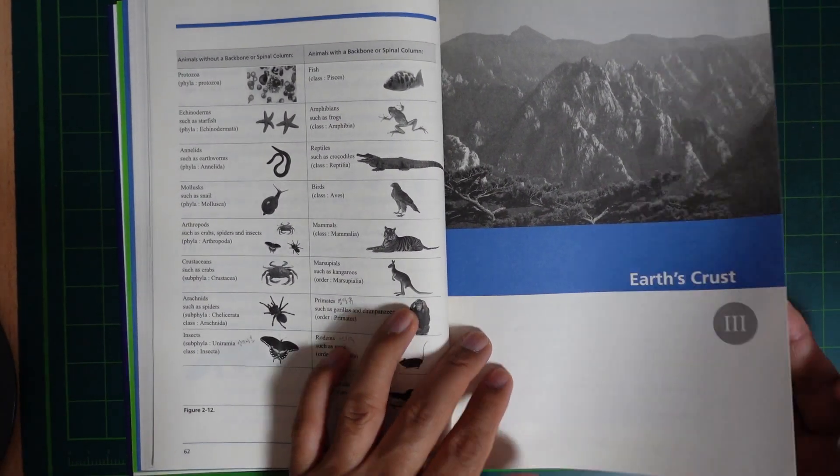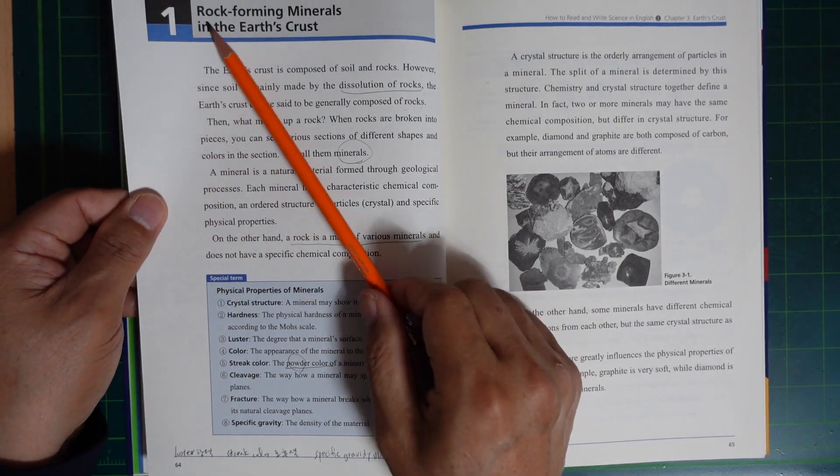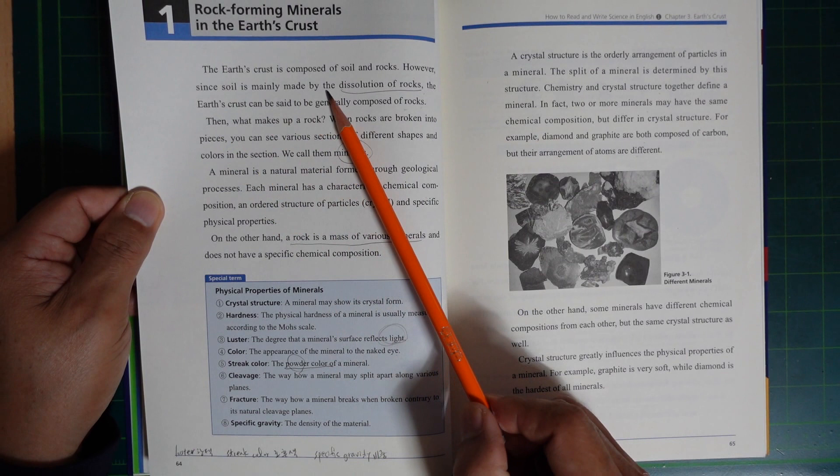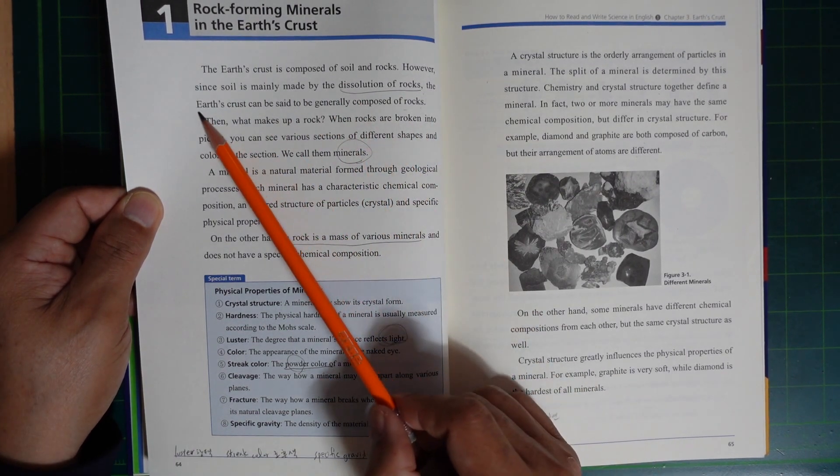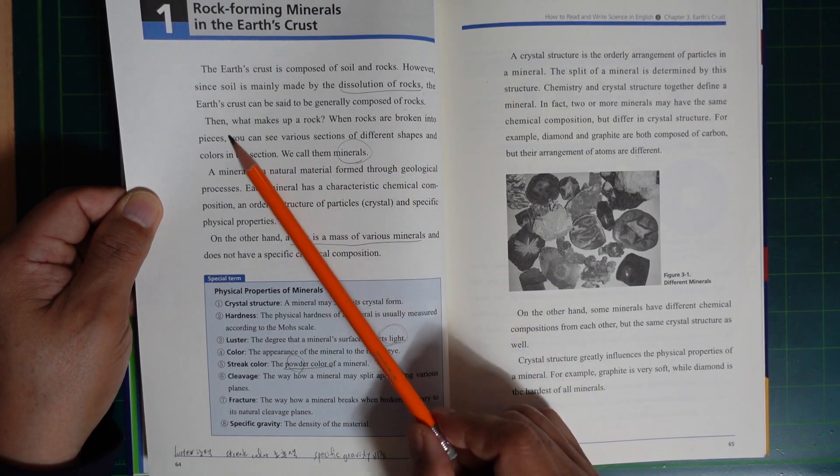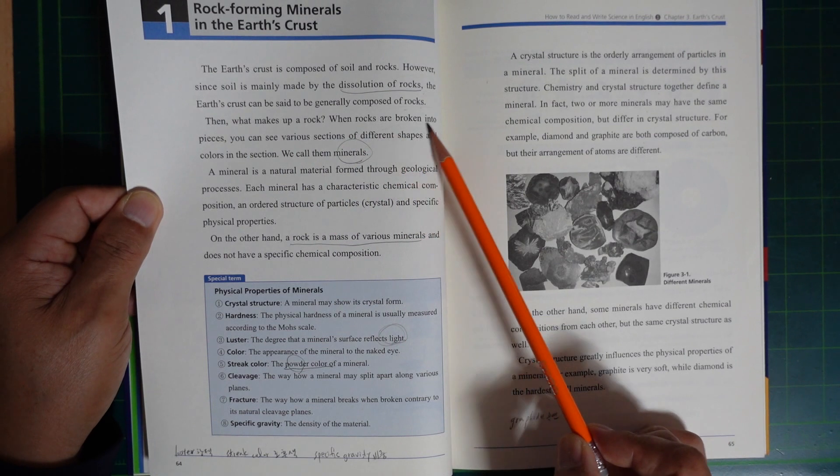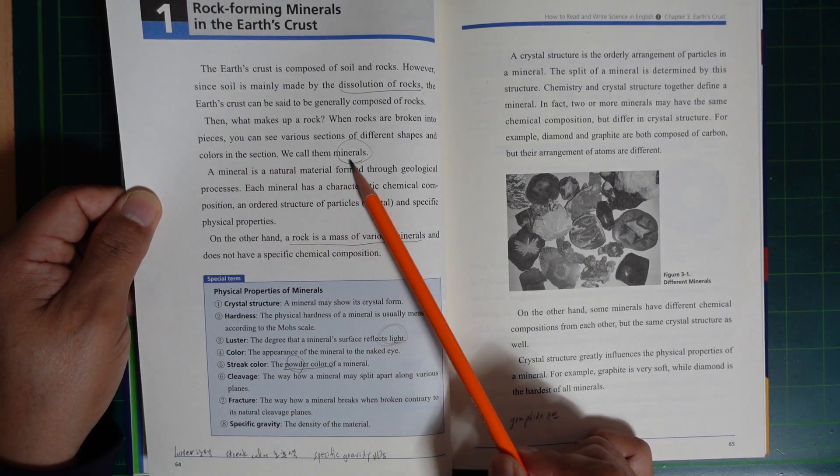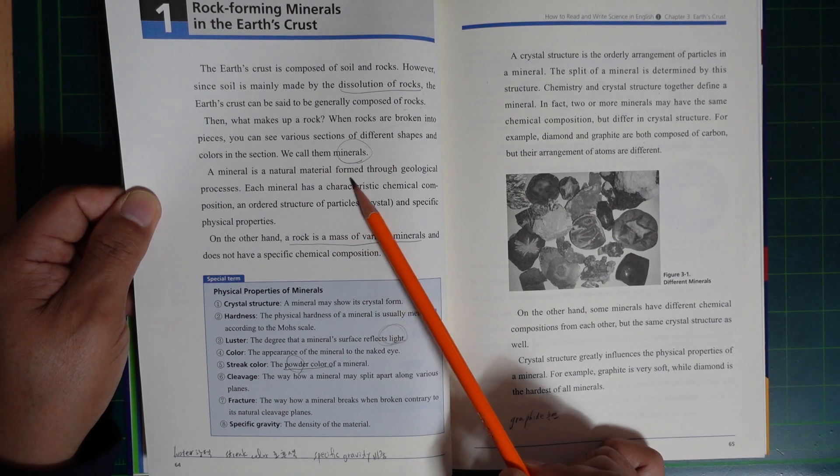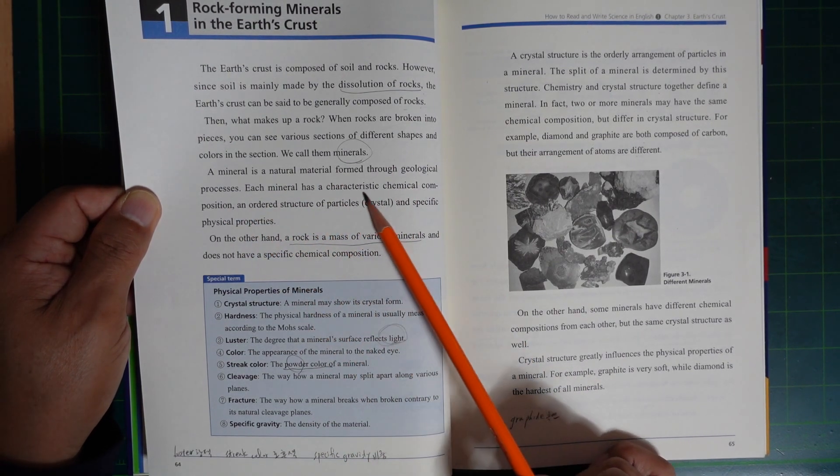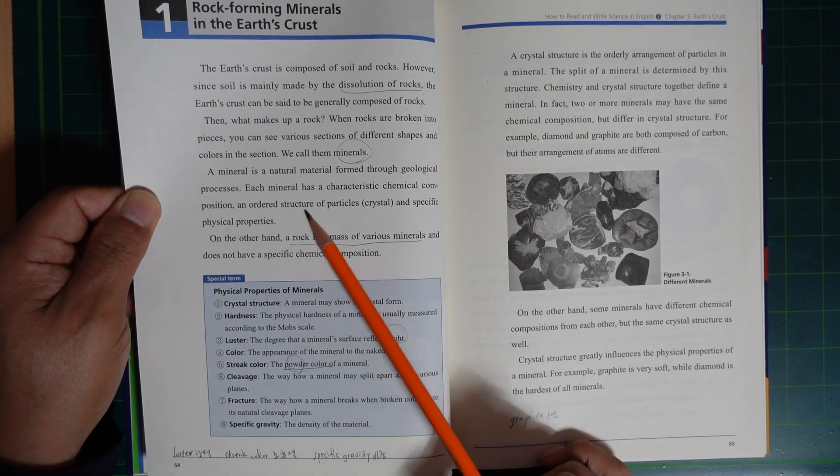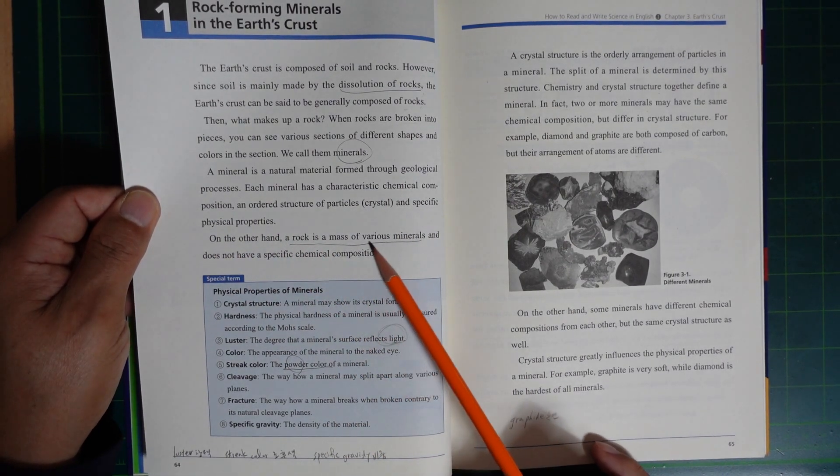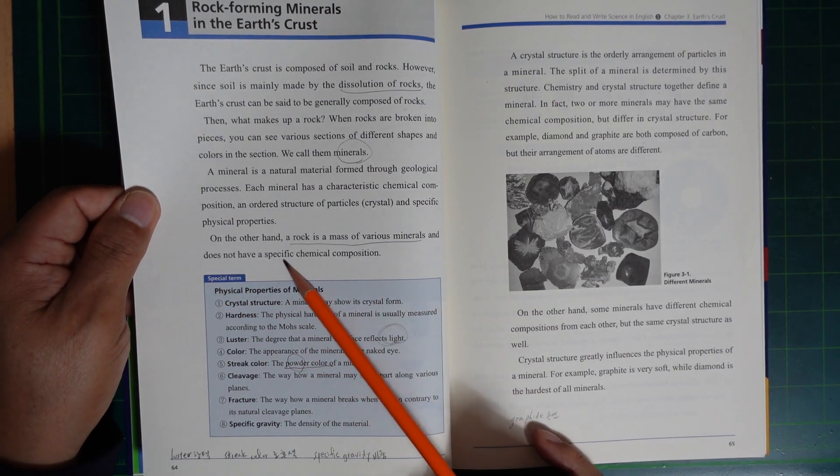Rock-forming minerals in the Earth's crust. The Earth's crust is composed of soil and rocks. However, since soil is mainly made by the dissolution of rocks, the Earth's crust can be said to be generally composed of rocks. When rocks are broken into pieces, you can see various sections of different shapes and colors. We call them minerals. A mineral is a natural material formed through geological processes. Each mineral has a characteristic chemical composition and atomic structure of particles, crystals, and specific physical properties. On the other hand, a rock is a mass of various minerals and does not have a specific chemical composition.